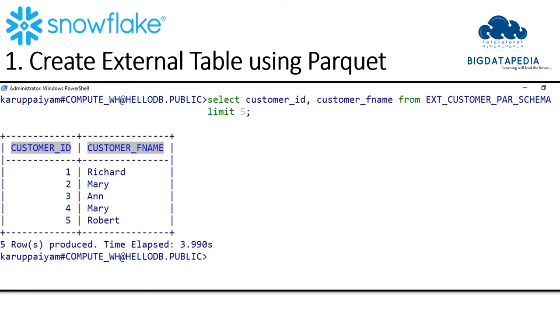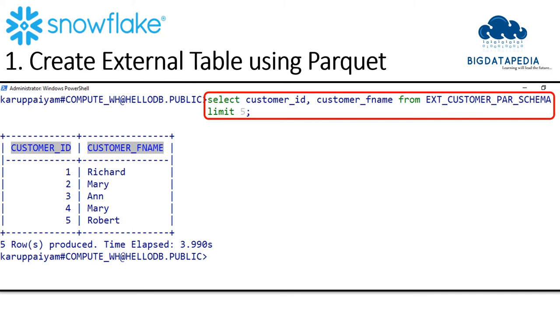Let me verify some columns on the table using a SELECT clause. If the columns are mapped successfully, then we can see the output in the result tab.